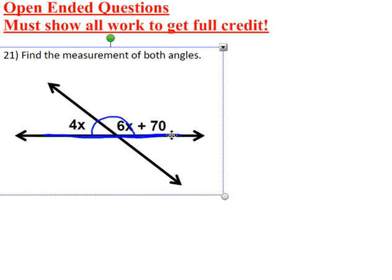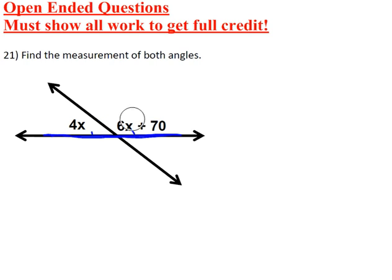So that means if you add both of the angles together, they should be equal to 180 degrees. So I'm going to go over here and set up my equation: 4x plus 6x plus 70 equals 180.